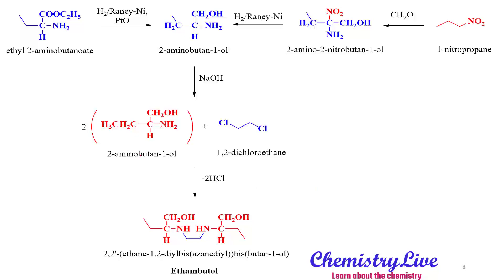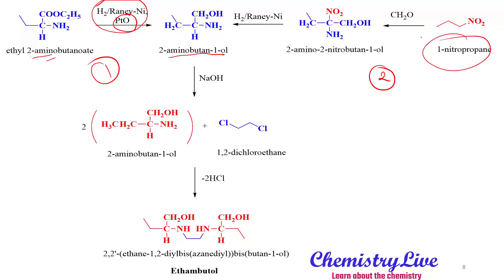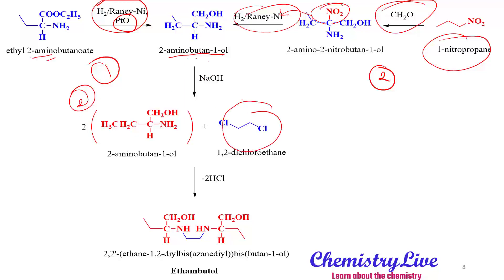In the synthesis of ethambutol, ethyl 2-aminobutanoate is reduced with H₂/Raney nickel in the presence of platinum oxide to give 2-amino-butan-1-ol. Alternatively, 1-nitropropane reacted with formaldehyde gives a nitro derivative, which is also reduced with H₂/Raney nickel to yield the same 2-amino-butan-1-ol. Then 2 moles of 2-amino-butan-1-ol react with 1,2-dichloroethane in the presence of base NaOH to give the final product: (2S,2'S)-2,2'-(ethane-1,2-diylbis(amino))dibutan-1-ol — ethambutol.